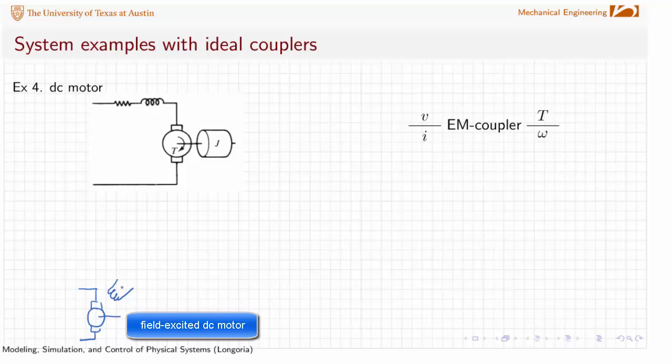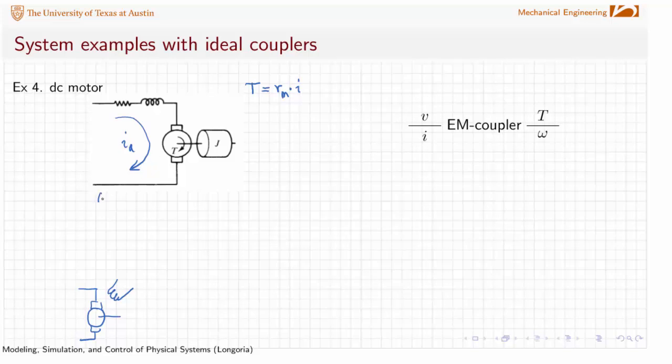You'll see different examples like that throughout this course. This is a permanent magnet DC motor. Usually the specifications will be given from a manufacturer that a constant is given. I'm going to use R sub M times the current here, and I'm going to show that the current is the current in the armature. This is usually called the armature circuit. That armature current is converted through this motor constant R sub M into this ideal motor torque.